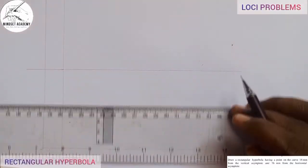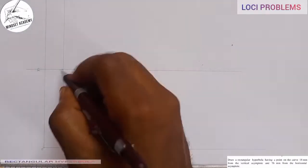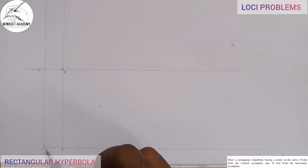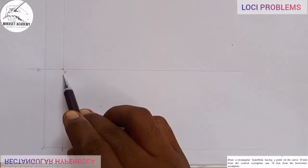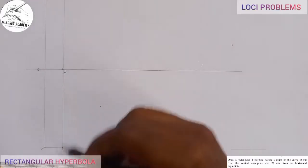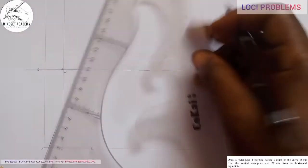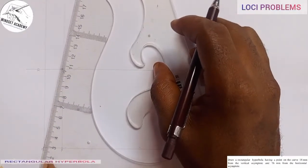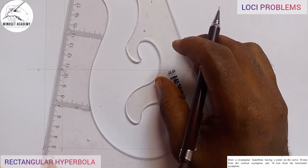I'll call that point O. Where the two lines meet, I'll call it point P. From this point here I will draw a line that will pass through point P and also cut through line P. I'll draw a line from this point such that it cuts through point P.